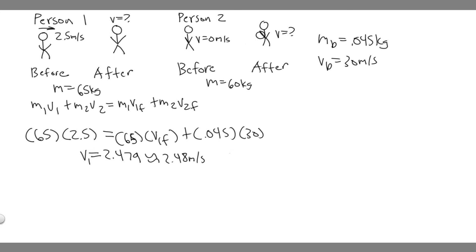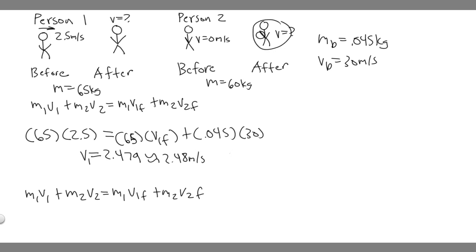Now let's find the velocity of person two after catching the snowball. We use the same conservation of momentum formula: m1v1 + m2v2 = m1v1_final + m2v2_final. In this scenario, m1 is person two and m2 is the snowball. Person two is at rest initially, so v1 = 0, making that term zero.